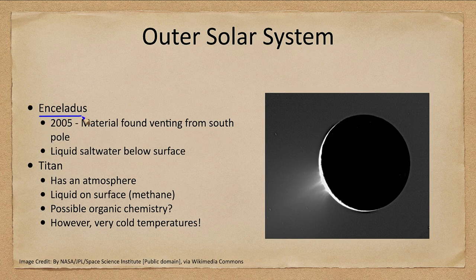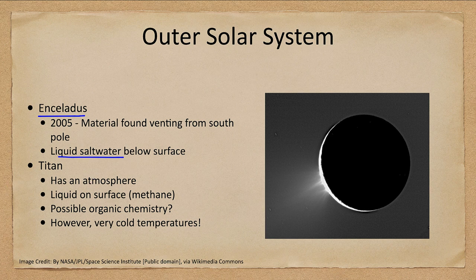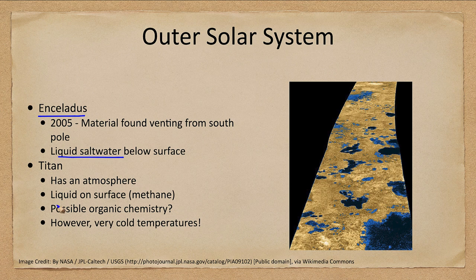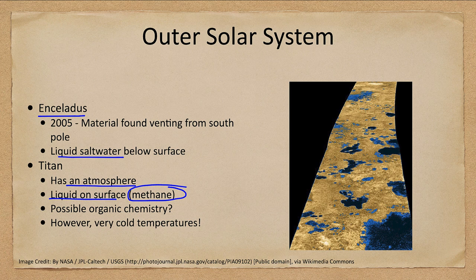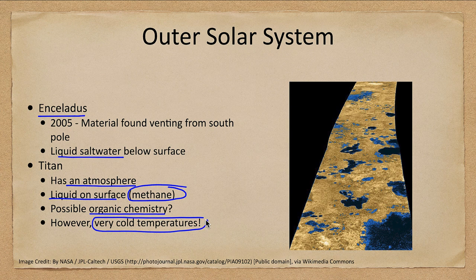We also have Enceladus, one of the moons of Saturn, which has material seen to vent from its south polar region, confirming it too has liquid water below the surface. The moon Titan, also around Saturn, is the only moon with an atmosphere, and it has liquid methane on its surface — the simplest organic compound, just one carbon atom and four hydrogen atoms. Could there be more complex organic chemistry leading to life? The difficulty is the very cold temperatures, which slow chemical reactions, meaning life would take much longer to form there.